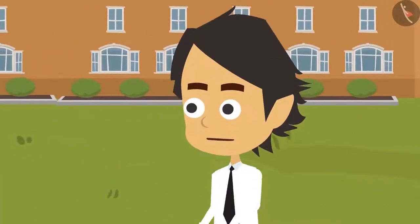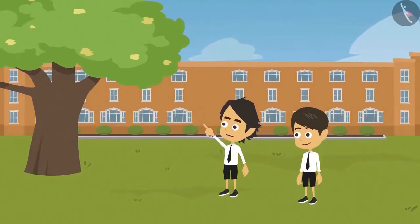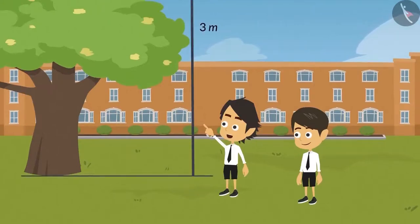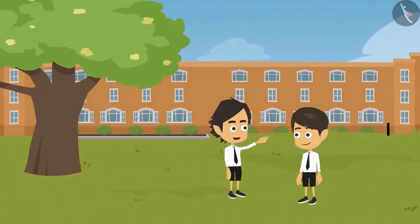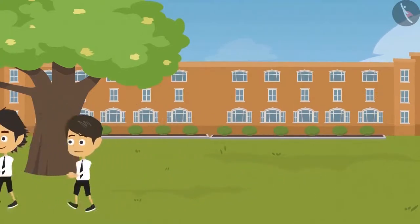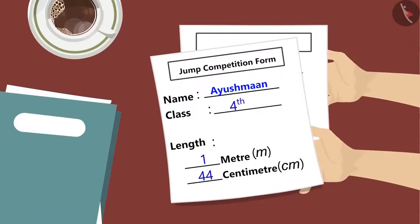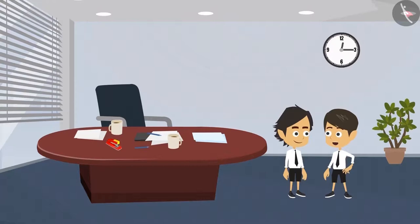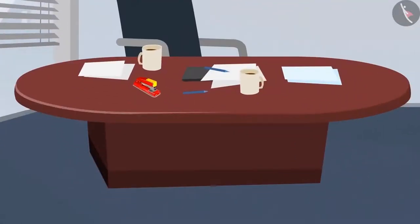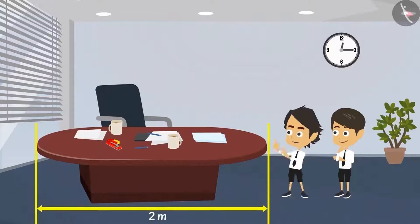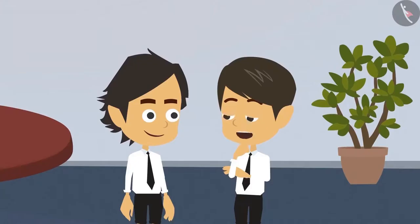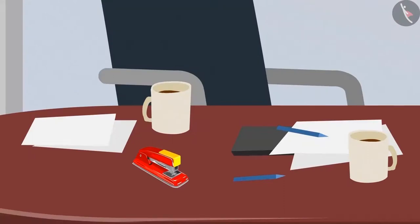Okay, that is easy. See, this tree — it would be appropriate to measure it in meters as it is very big. The height of our school building too should be measured in meters. The teacher is not here; let's keep the form here. Now tell me, which unit will you use to measure this table? We will measure it in meters as it is very big. So will we measure the stationery items on the teacher's table such as paper, stapler, and pen in centimeters? Yes, because all these objects are very small.